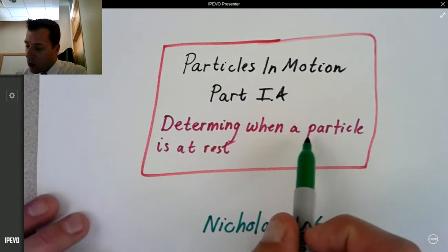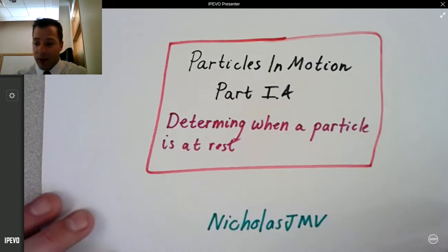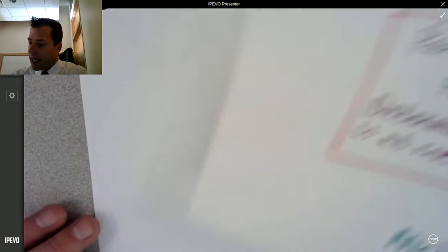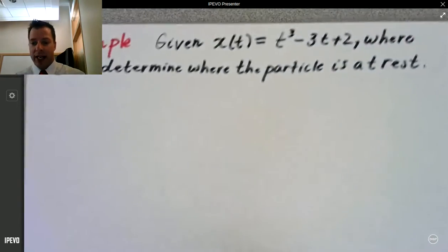Today we're going to be determining when a particle is at rest. This is Nicholas JMV, pretty simple example. So let's go ahead and get started.